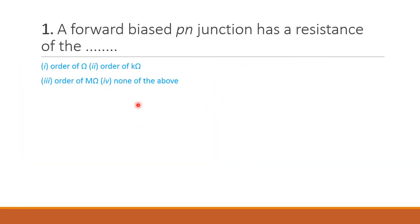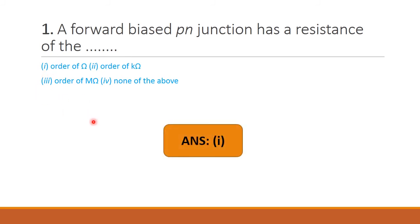Now let us discuss some important multiple choice questions. First question: A forward-biased PN junction has a resistance of — option 1: order of ohm, option 2: order of kilo ohm, option 3: order of mega ohm. Forward-biased PN junction means there will be a flow of current, so the resistance value will be very less. The answer is order of ohm — option 1 is the correct answer.